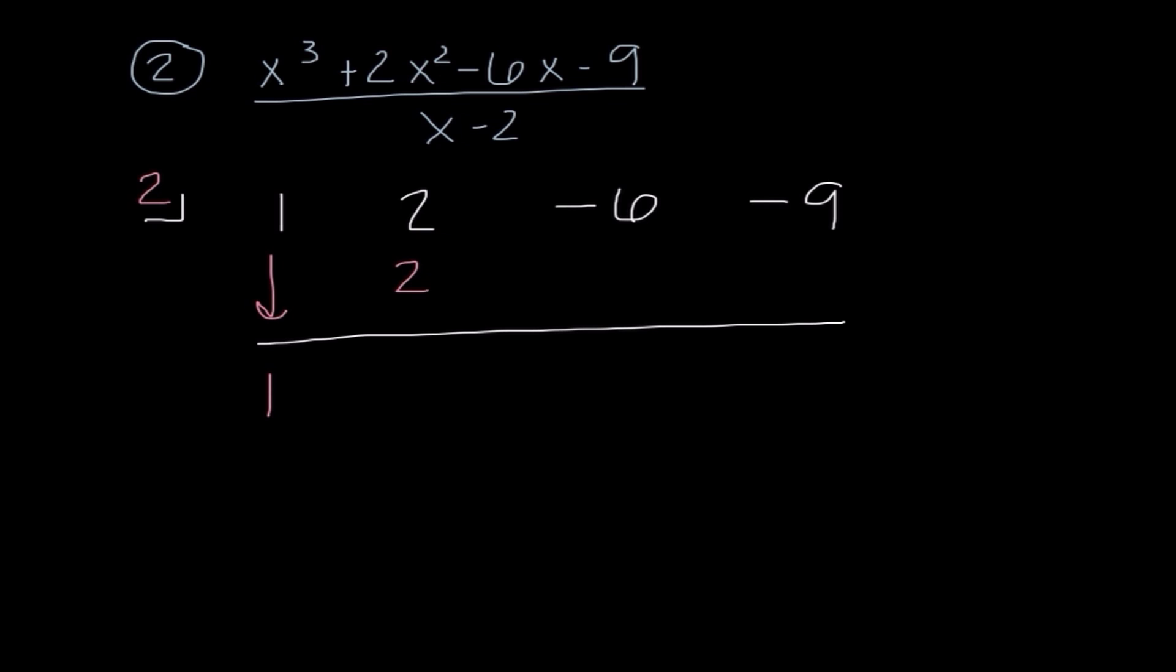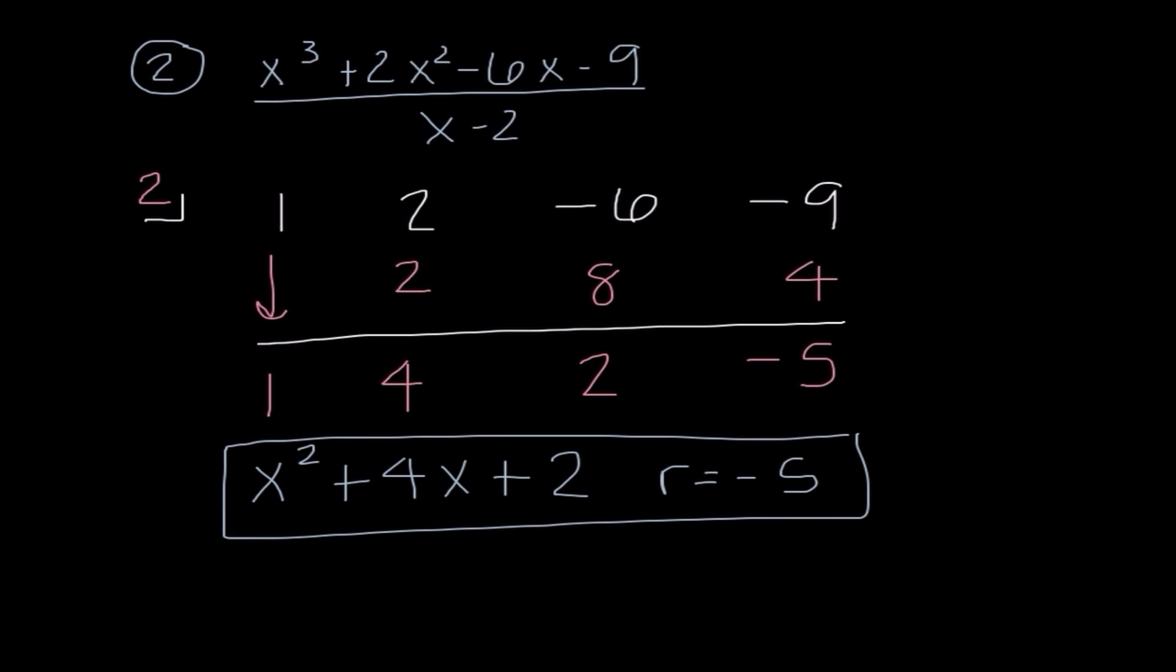So now let's get started. When I bring down 1, 1 times 2 is 2. When I add, I get 4. 4 times 2 is 8. When I add, I get 2. 2 times 2 is 4. When I add, I get negative 5. We always start one degree lower. So since our original problem was x cubed, this is going to be 1x squared plus 4x plus 2 remainder negative 5. I vastly prefer this method to our long division because I think it saves a lot of time.